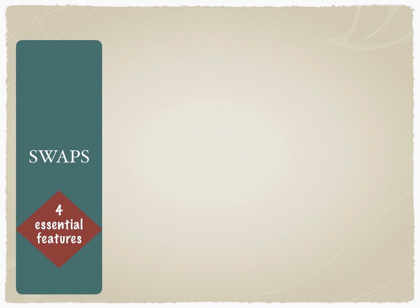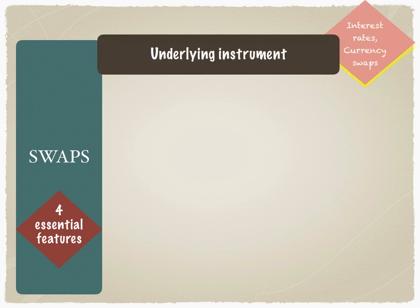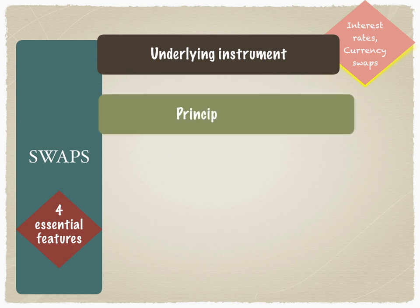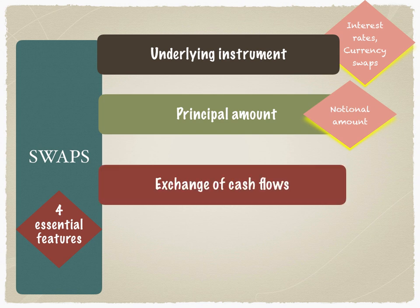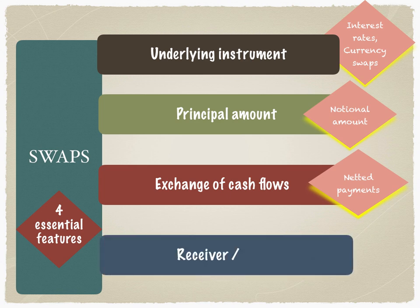Swaps therefore have four essential features. First, there is an underlying instrument, giving rise to currency swaps and interest rate swaps. Second, there is a principal amount, also called the notional amount, which never gets exchanged. Third, there is an exchange only of periodic cash flows — monthly, quarterly, or semi-annually — and these are netted payments. The swap dealer nets out the payments to facilitate ease of exchange of cash flows. Fourth, the swap always has two counterparties: receiver and payer, not buyer and seller.